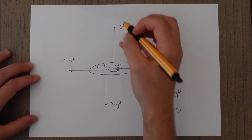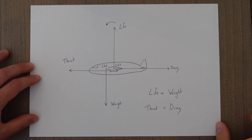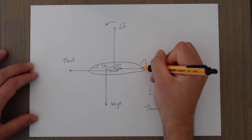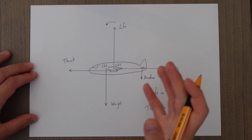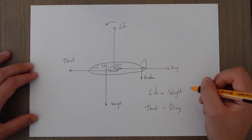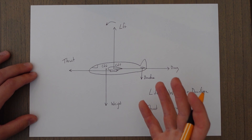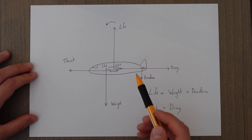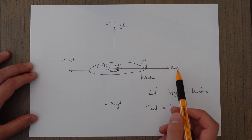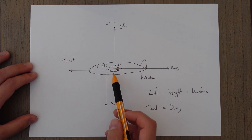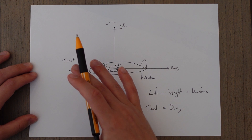We also have the turning moment, which is caused by the lift-weight couple. This is counteracted by downforce produced at the tail. This downforce is effectively added to our weight and that is what has to be overcome by the lift. So lift is equal to weight plus the downforce. Another turning moment is usually formed by the engines and the drag. Drag acts straight back from the center of pressure and thrust acts through the center of the engines.